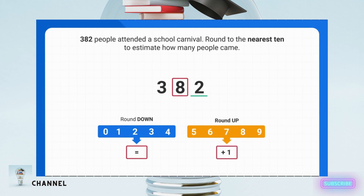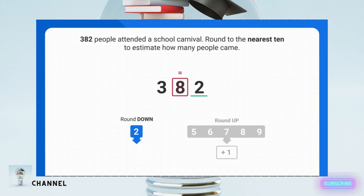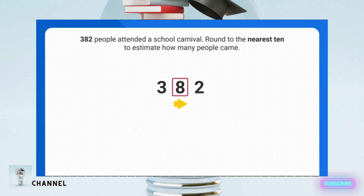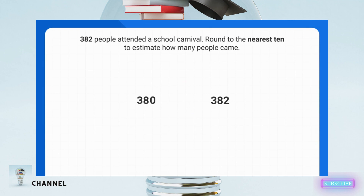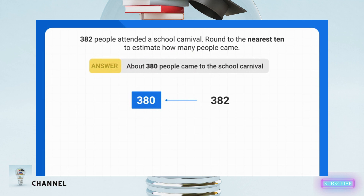In 382, the underlined digit is two, which is less than five. That means that the circled digit stays the same. Last, all the digits to the right of the circled digit become zeros. When rounded to the nearest 10, 382 rounds down to 380. This means that about 380 people came to the school carnival.